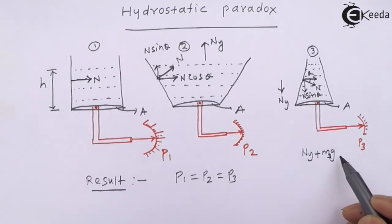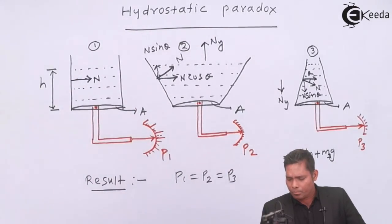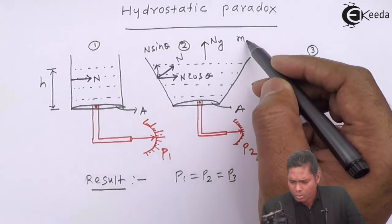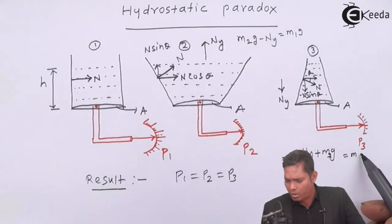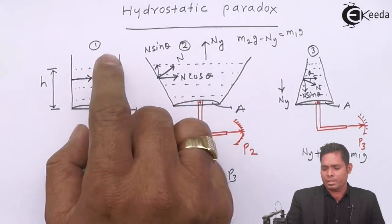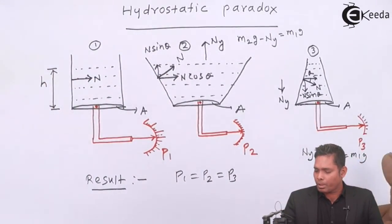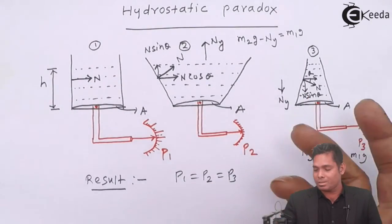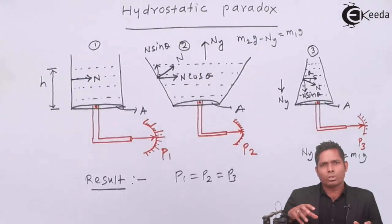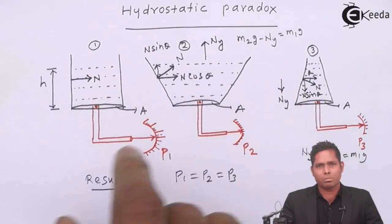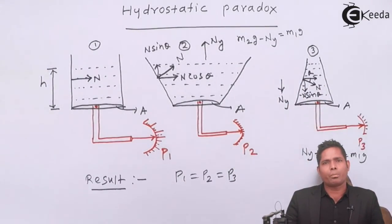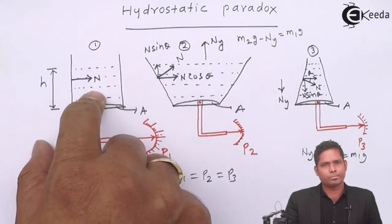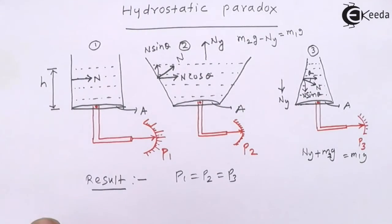The mass in vessel three is less, but with the addition of the downward normal component, it equals the effective weight of vessel one. In vessel two, subtracting the upward normal component from the total mass gives the same effective weight. In vessel one, with no wall component, it is simply the mass M. So in all three cases the net downward force at the base is the same — and this is how the pressure remains the same. This is known as the hydrostatic paradox.